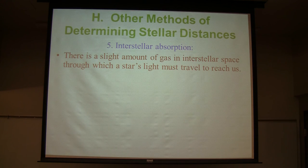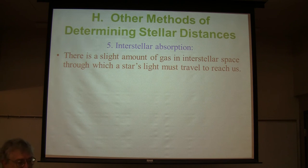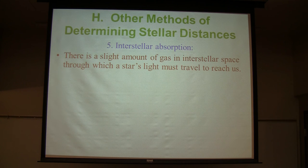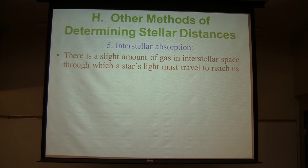Interstellar absorption: there's a slight amount of gas and dust in interstellar space, and when starlight passes through it, some light is absorbed or scattered. By doing calculations on stars whose distance is known, we can set up a scale for how much absorption corresponds to how much distance. For a star too far away to measure its actual distance, we can see how much the absorption lines differ compared to each other, and use that calibrated scale to calculate how far away it is. These are very rough estimates, but sometimes that's all you have — this method does give a distance when no other method works particularly well.